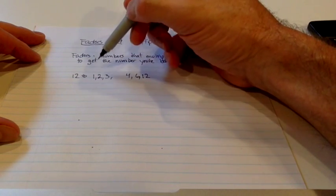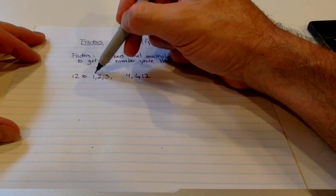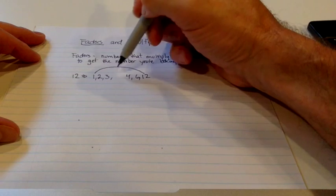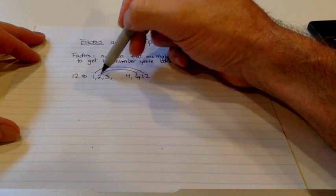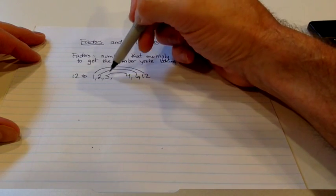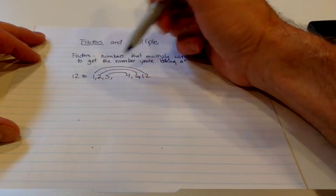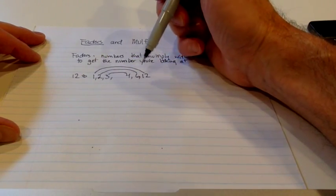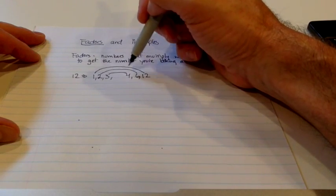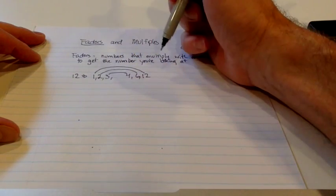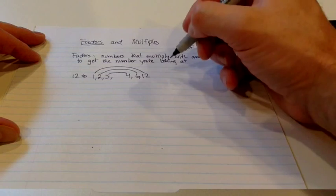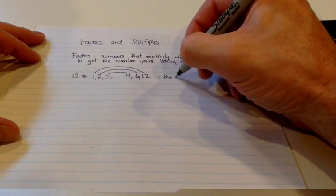What I can do here is do something called a factor rainbow, where I basically tie together the factors in a way that I know that 3 times 4, 2 times 6, 1 times 12 gives me 12. And that makes sure I don't miss anything. If I've got a number that's right here that doesn't have a rainbow connecting it to another number, I know I've missed something. So these are the factors of 12.